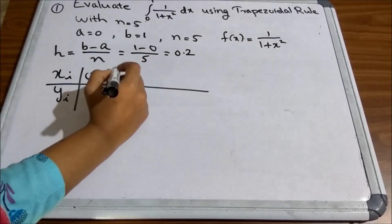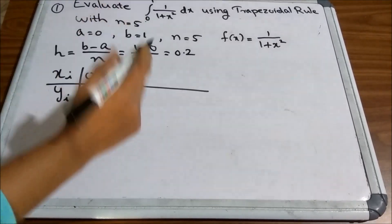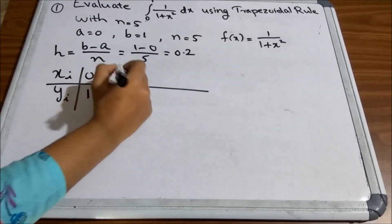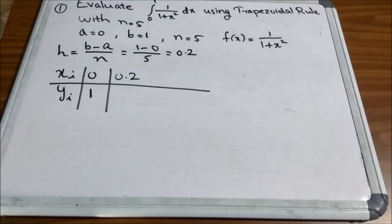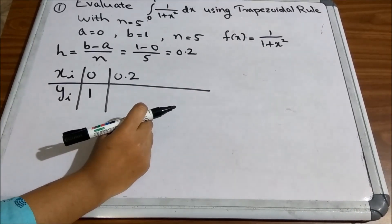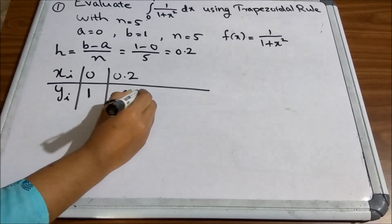Then, x1 will be, you have to add 0.2 to get the next x1. So, 0 plus 0.2, so 0.2. And corresponding value of f of x will be 1 by 1 plus 0.2 the square which is 0.9615.